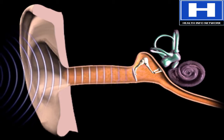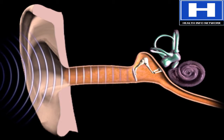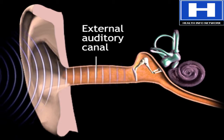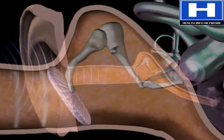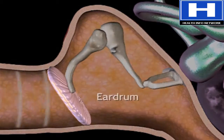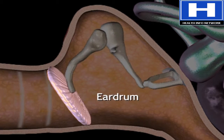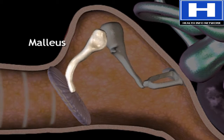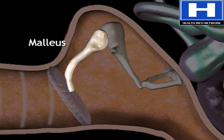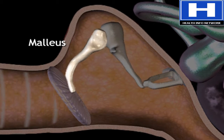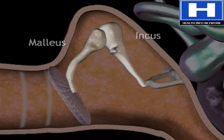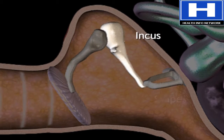Sound waves entering the ear travel through the external auditory canal before striking the eardrum and causing it to vibrate. The eardrum is connected to the malleus, one of three small bones of the middle ear. Also called the hammer, it transmits sound vibrations to the incus, which passes them to the stapes.